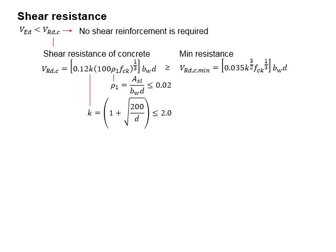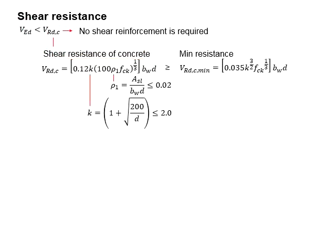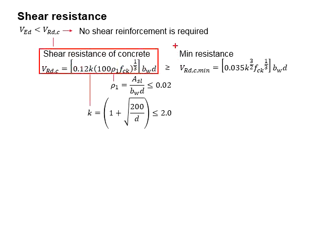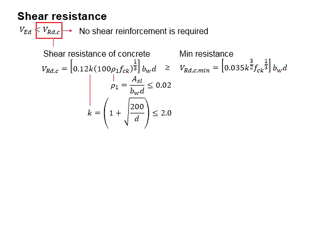Similar to a slab, a retaining wall normally does not require shear reinforcement. This is mainly because of the relatively large cross-sectional area of the retaining wall with respect to the load acting on it. You need to check the shear load against the shear resistance of the concrete without any shear reinforcement. The equation for shear resistance is a function of k and rho1, which represents the amount of reinforcement. The shear resistance of the concrete should theoretically be greater than the minimum shear resistance.